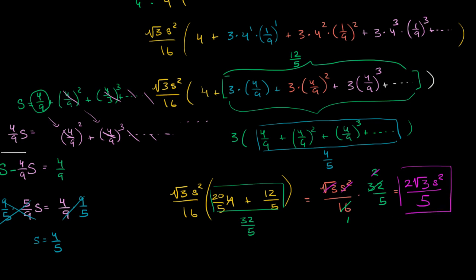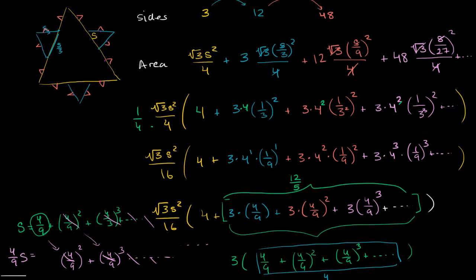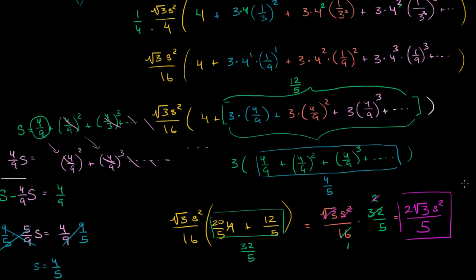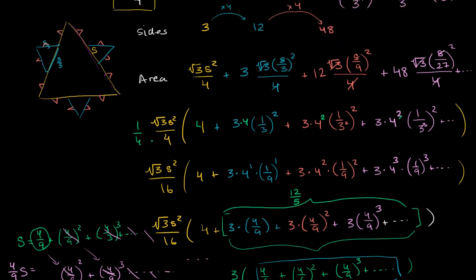So for example, if that first equilateral triangle we started out with had a side length of 1, then the area of this crazy thing that has an infinite perimeter would just be 2√3 over 5. Anyway, I think that's kind of cool.